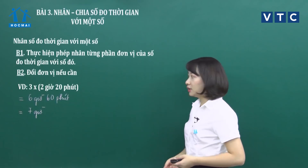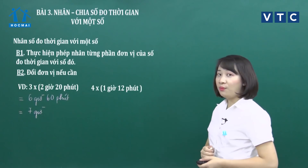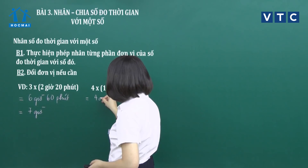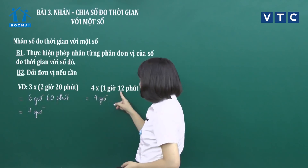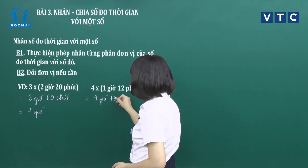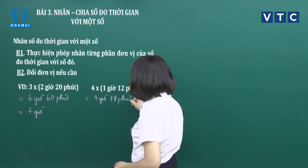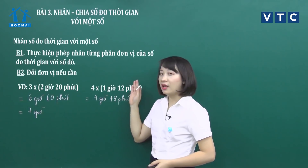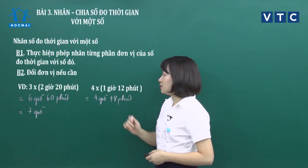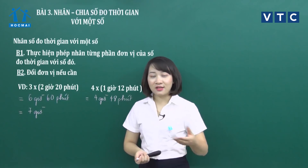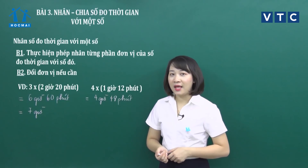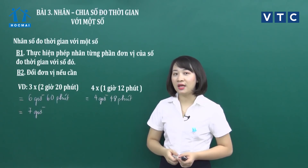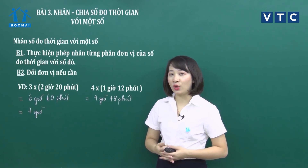Ở ví dụ số 2: cô có 4 nhân 1 giờ 12 phút. Ở bước thứ nhất, lấy 4 nhân 1 bằng 4 giờ. Lấy 4 nhân 12 phút thì bằng 48 phút. Trong ví dụ này, 48 phút nhỏ hơn 60 phút, nên không đổi sang đơn vị giờ. Chúng ta giữ nguyên là 4 giờ 48 phút. Sau này có thể đổi ra số thập phân hoặc phân số để tính toán dễ dàng hơn.